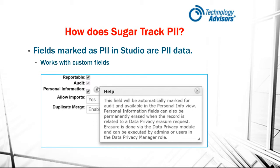So how do we track PII in SUGAR? They've made it very easy with just an additional checkbox in Studio. You can see in the screenshot that there is a checkbox labeled Personal Information, and it even has a help screen that tells you all of the different places this checkbox will affect in SUGAR. It makes it really easy to go into your system and start checking things you need to track, things like name, email address, phone number, among a lot of other data that could be considered PII.